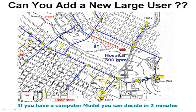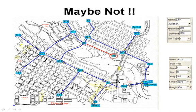We asked earlier: can you add a new user here? We can very quickly add a pipe and a demand — it only takes seconds to evaluate this. In fact, here we see the pressure is only 23 PSI, so we can't add a new user with a 6-inch pipe. If we do an 8-inch pipe, we could quickly evaluate whether that would do the job.